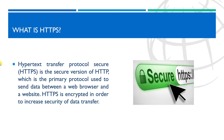HTTPS uses an encryption protocol called Transport Layer Security, or TLS — although formerly it was known as Secure Socket Layer, or SSL. This protocol secures communication using an asymmetric public key infrastructure. This type of security system uses two different keys to encrypt communication between two parties: the private key and the public key.